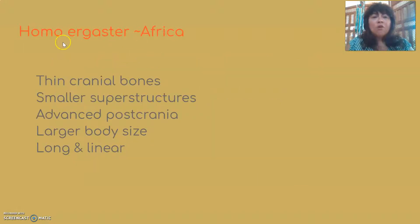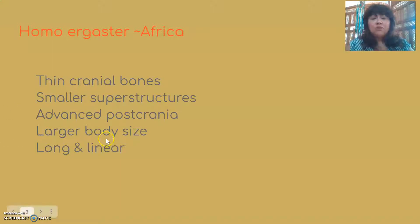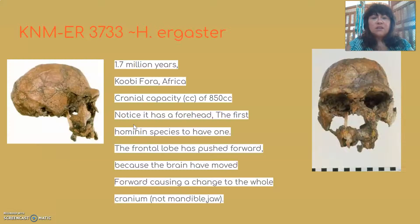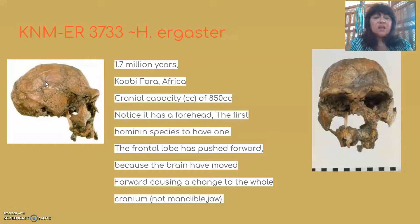Homo ergaster is only found in Africa. This species has thin cranial bones, smaller superstructures in the face and skull, and advanced post-crania — meaning changes below the skull — with larger body size and long, linear skeletons. The first specimen is KNM-ER 3733, dated to 1.7 million years ago, found in Koobi Fora, Africa, with a brain case of about 850cc — roughly twice that of australopithecines.